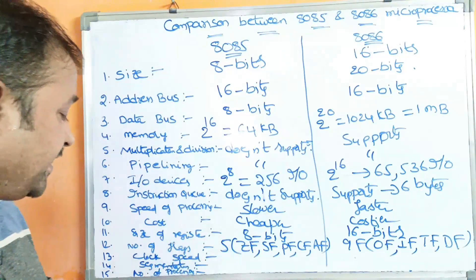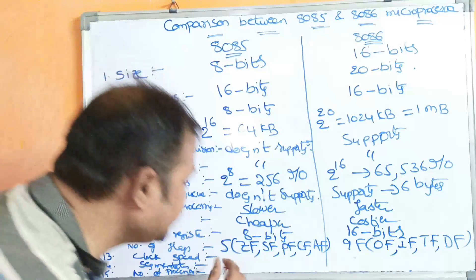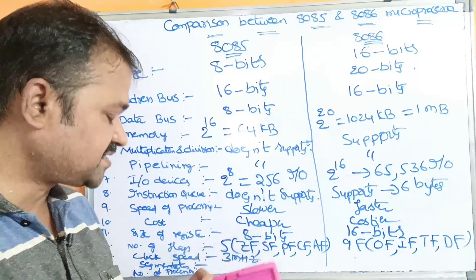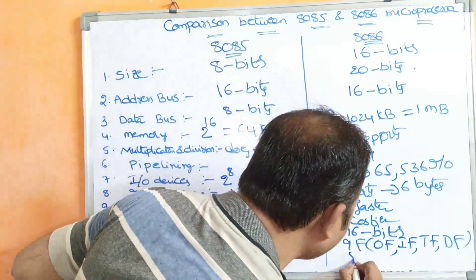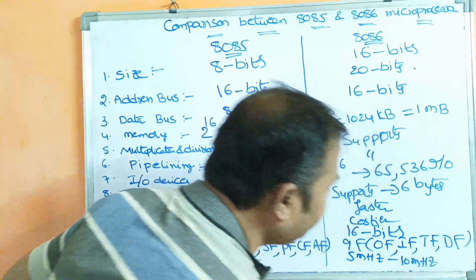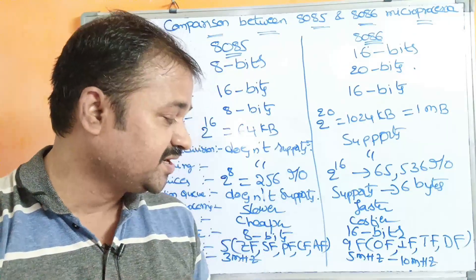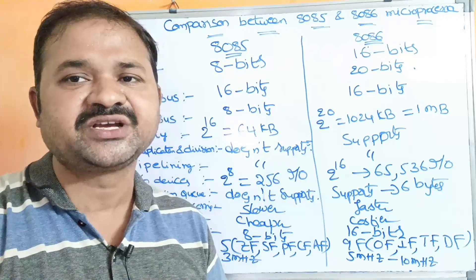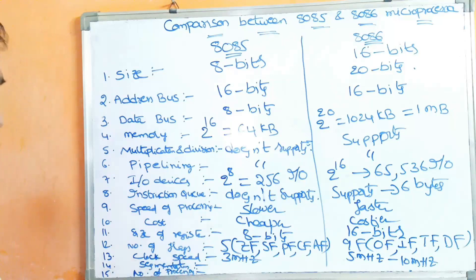The next characteristic is clock speed. The 8085 microprocessor operates at a frequency of 3 MHz. Whereas the 8086 operates at 5 MHz to 10 MHz depending on the version: the standard 8086 runs at 5 MHz, the 8086-2 at 8 MHz, and the 8086-1 at 10 MHz.